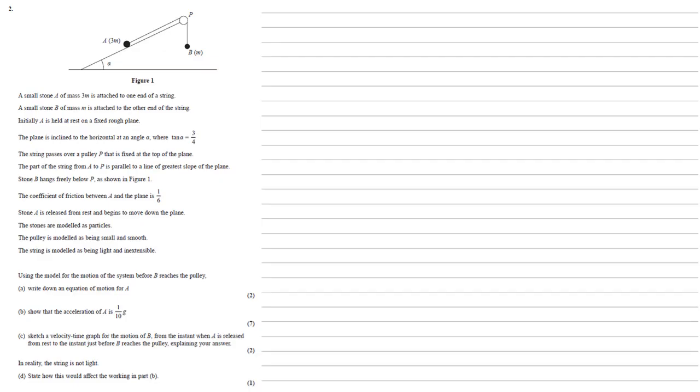A small stone A of mass 3m is attached to one end of a string. A small stone B of mass m is attached to the other end of the string. Initially A is held at rest on a fixed rough plane.